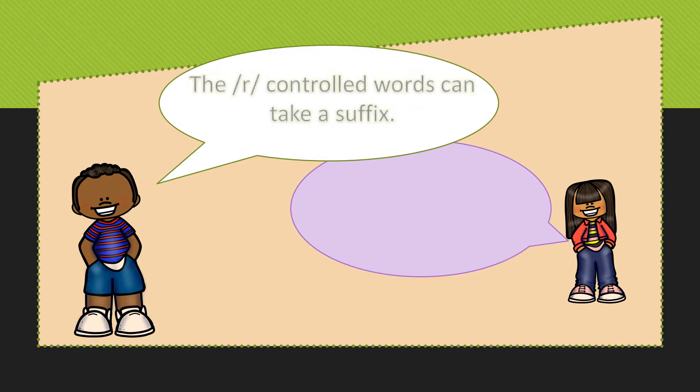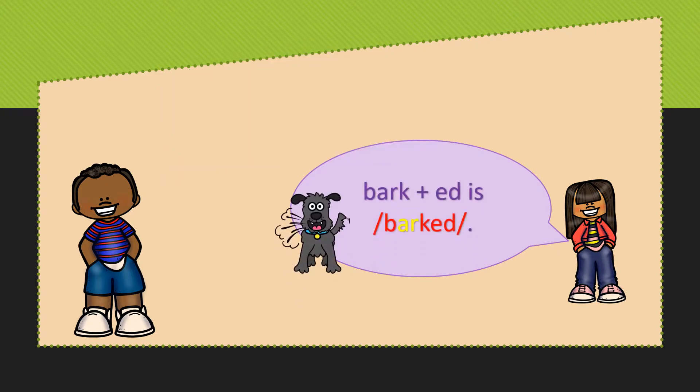The R controlled words can take a suffix. Let's try one with the suffix ED. Bark is the base word, ED is the suffix. It becomes the word barked.